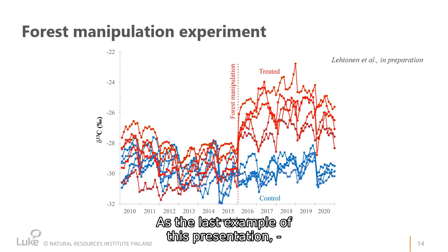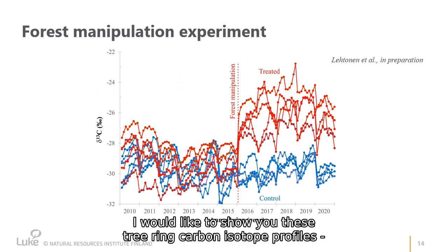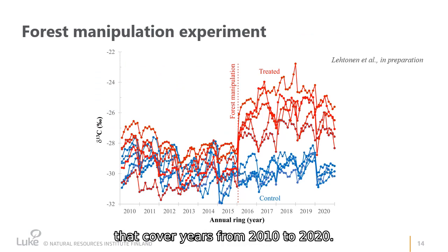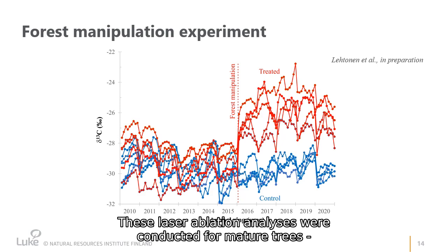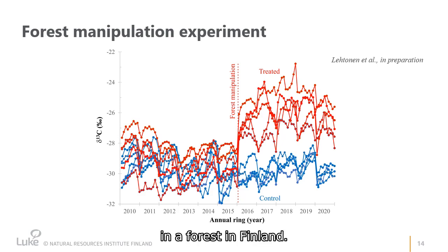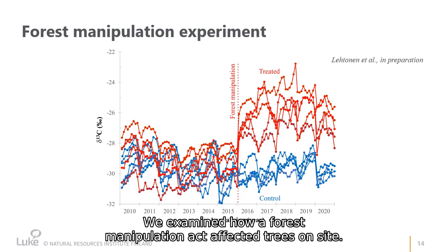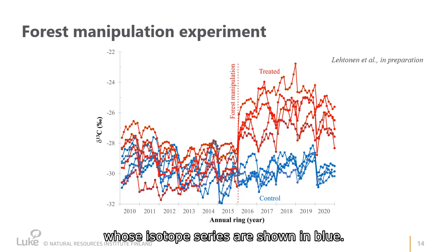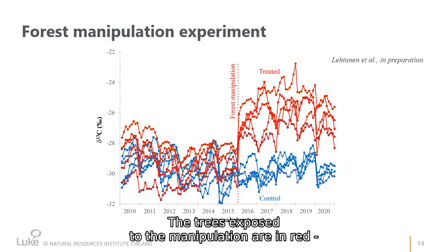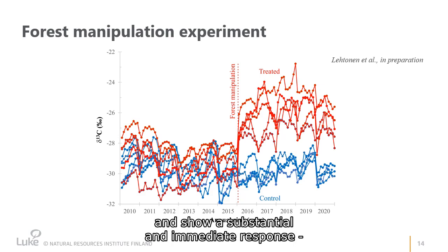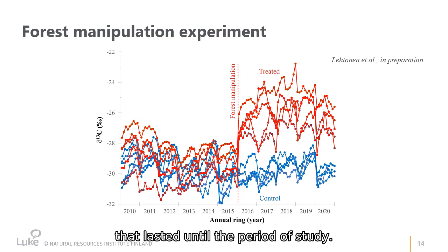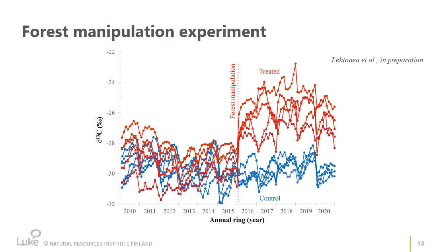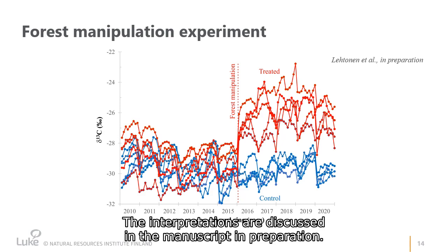As the last example, I would like to show tree ring carbon isotope profiles covering years from 2010 to 2020. These laser ablation analyses were conducted for mature trees in a forest in Finland to examine how a forest manipulation act affected trees on site. We had a control group whose isotope series are shown in blue. The trees exposed to the manipulation are in red and show a substantial and immediate response that lasted throughout the period of study. The interpretations are discussed in the manuscript in preparation.